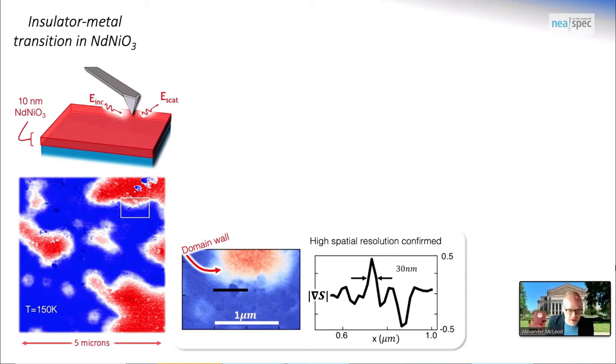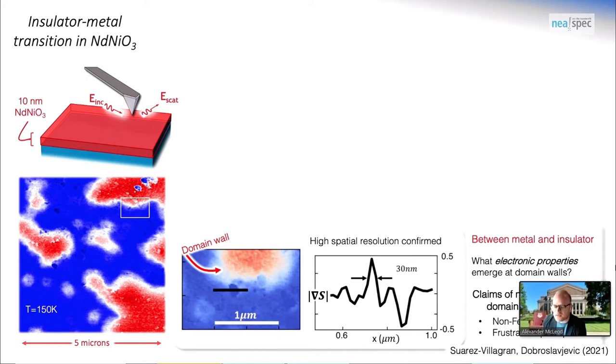Yet some of the electronic phases and their spatial extent is much in excess of that length scale, indicating that we really do have some sort of intermetallic response that lingers at the boundary between insulator and metal. Why is that interesting? There are claims of new physics at these domain walls, particularly by Dobry Slaviewicz and company, who have done theoretical studies on the non-fermi liquid characteristics of the electronic phase of this intermetallic boundary. So my question is, what are the electronic properties that are emerging at these domain walls?